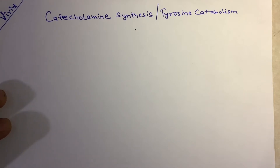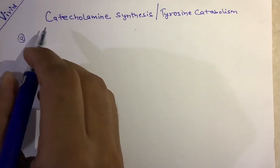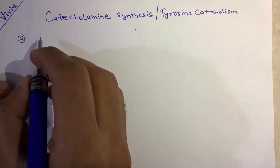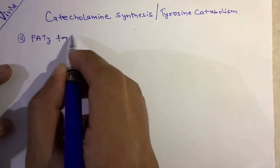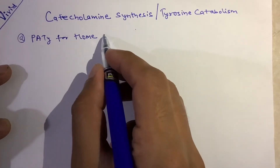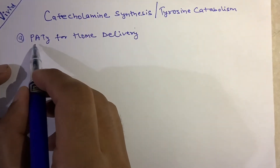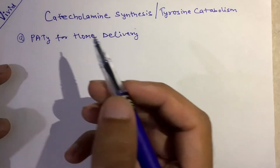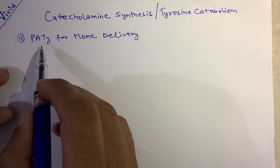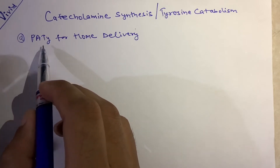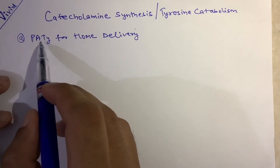The sentence is: 'I have ordered patty for home delivery.' Patty — the spelling is P-A-T-T-Y — is a flat bread found in a burger. Now, what is the association between this sentence and catecholamine synthesis?